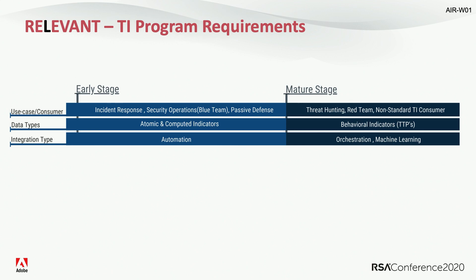The maturity model is based on use cases. Threat Intel usually starts with security operations and incident response, and it's completely okay to start there because it's also easier. To reflect on that, we mainly need atomic or computed indicators — IPs, domains, file hashes, URLs, email addresses, and so on. The integration type is automation. You cannot do Threat Intelligence without automation — you cannot make it useful if you have an Excel spreadsheet and you're adding that to your SIEM to detect something.